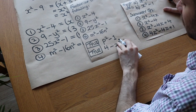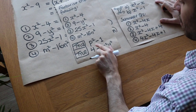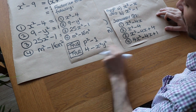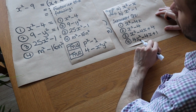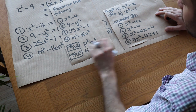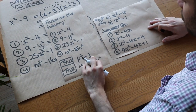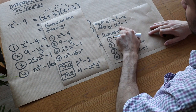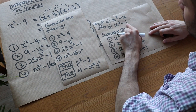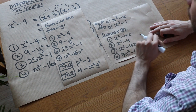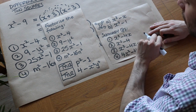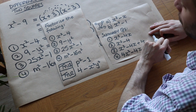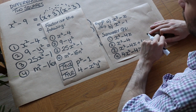Now some test-your-understanding questions. We've got p squared minus 1 and 4 minus x squared y squared — factorise those using the difference of two squares. There are also two killer questions: x cubed minus x, and x to the 4 minus 1. As a hint, you may need to use more than one type of factorisation, or the same type twice. You may want to pause the video to try those.